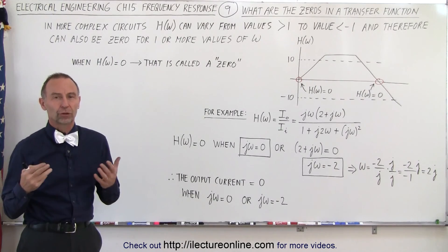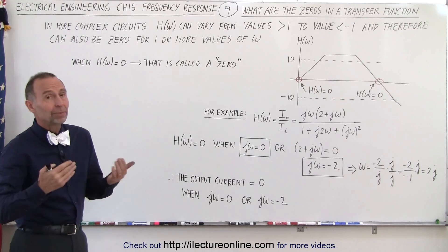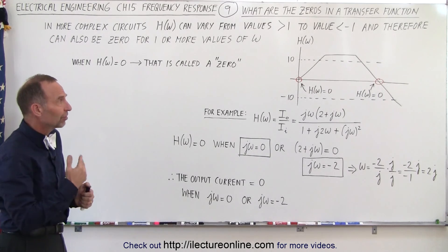We have gains in certain circuits that go well beyond 1 and well below the negative numbers, and that means that in some cases the gain or the transfer function will be 0.